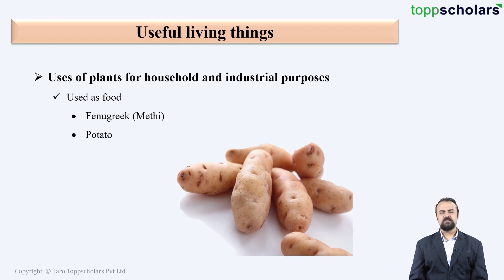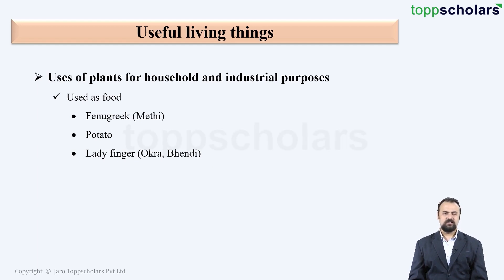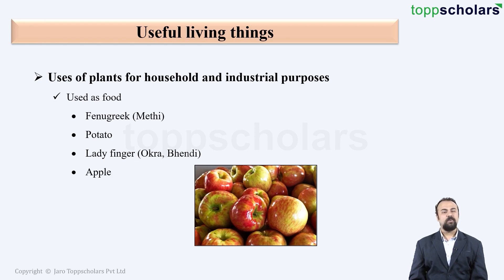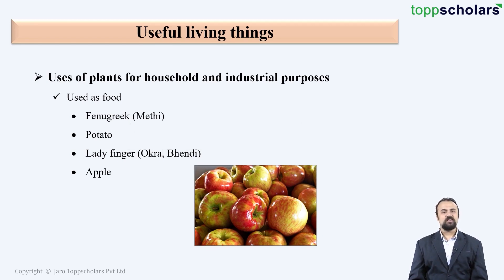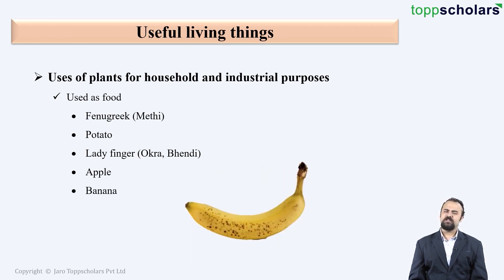Various types of vegetables and other delicacies are prepared using potato. Next we have lady finger, which is also known as okra or bhindi — another very much favorite vegetable of thousands and thousands of Indians. Next we have apple, which is a very good fruit. You must have heard the saying: an apple a day keeps the doctor away. We also have banana, which is another fruit which can be consumed.